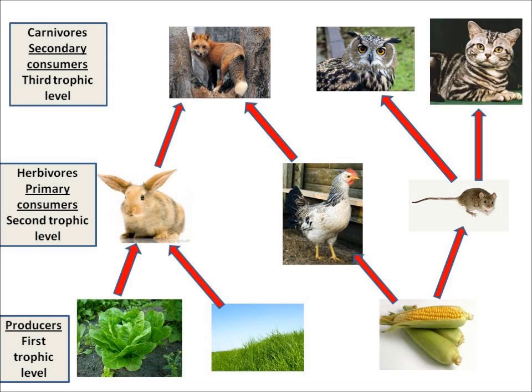There's a term you need to know which is interdependence — the dynamic relationship between all living things. My food web shows interdependence: the rabbit depends on eating the grass and the fox depends on eating the rabbit.